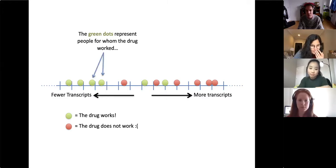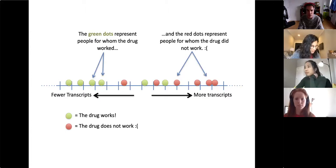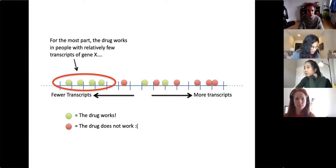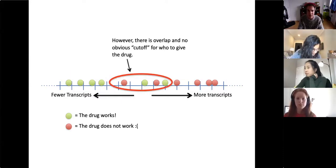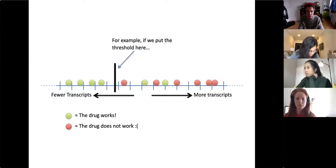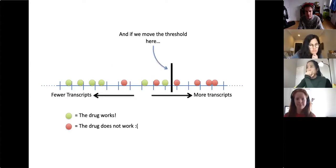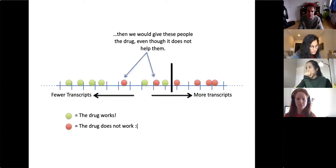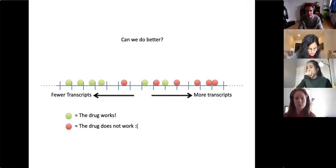The green dots represent people for whom the drug worked, and the red dots represent people for whom the drug did not work — it made them feel worse. For the most part the drug works in people with relatively few transcripts for gene X, and does not work in people with a relatively large number. However, there's overlap and no obvious cutoff. Gene X does an okay job but it's not great — can we do better?